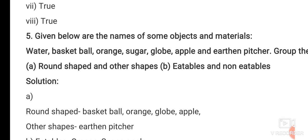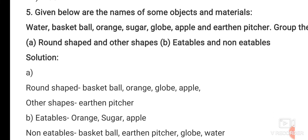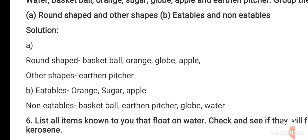Here is another question. There are some objects and you have to divide them into two categories: round-shaped or other shapes, and then eatables and non-eatables. Round shapes include basketball, orange, globe, and apple. Other shapes include earthen pitcher. For eatables versus non-eatables: eatables are orange, sugar, and apple. Non-eatables are basketball, earthen pitcher, globe, and water.